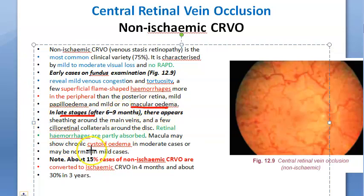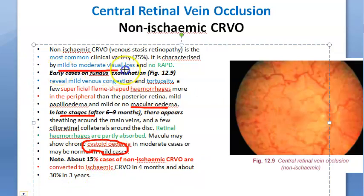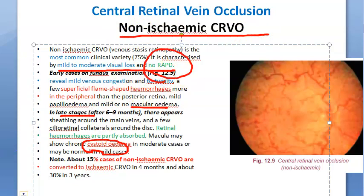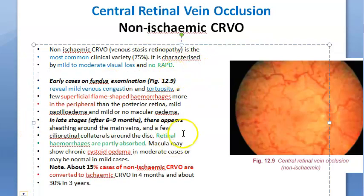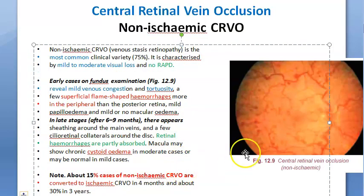In later stages, there can be cystoid edema and retinal hemorrhages that can be partly absorbed. The characteristic feature of non-ischemic CRVO is mild to moderate visual loss and no RAPD. So in non-ischemic CRVO you have early and late phases, and some of them can progress to become ischemic.